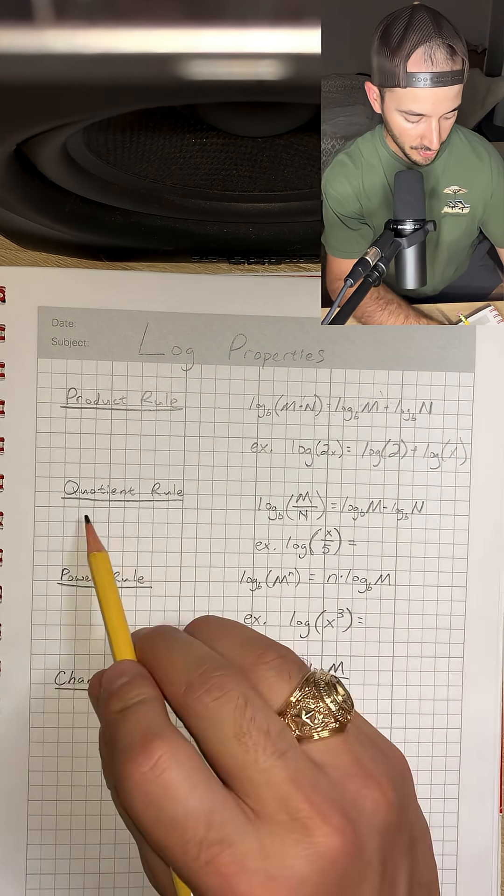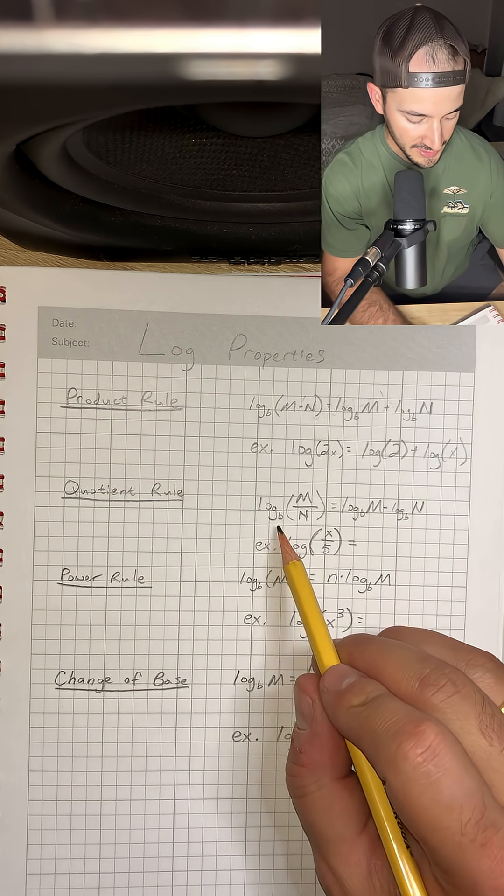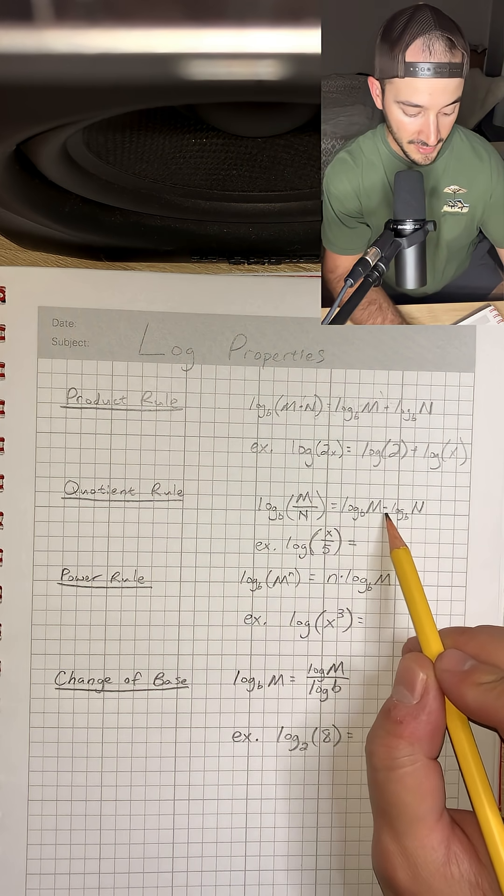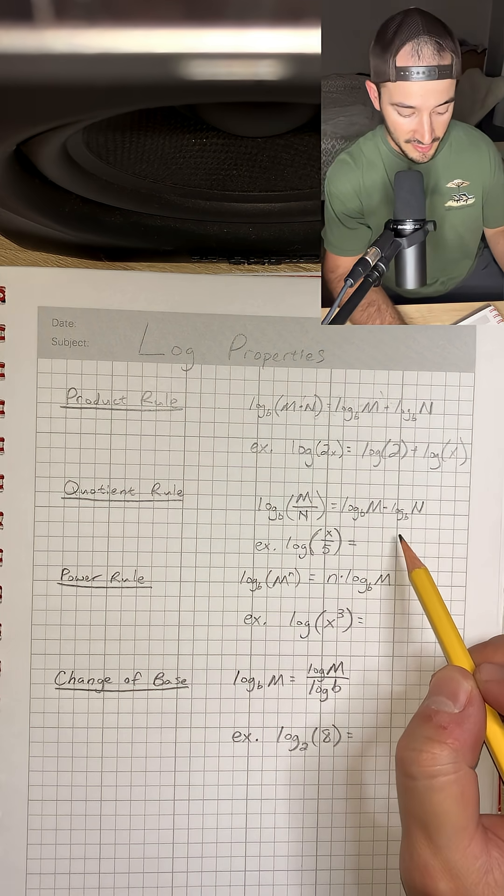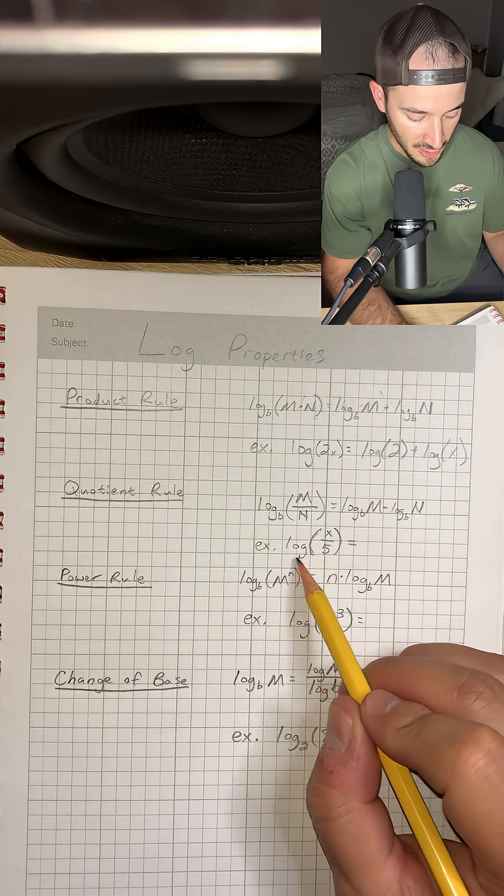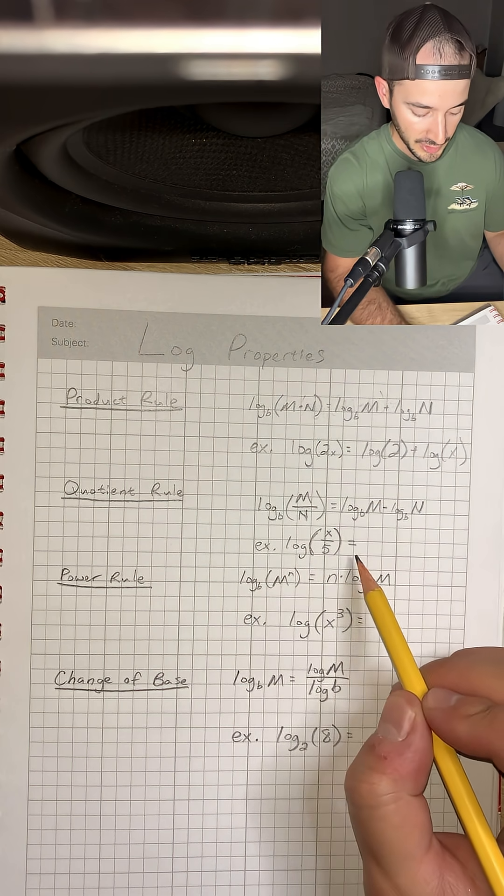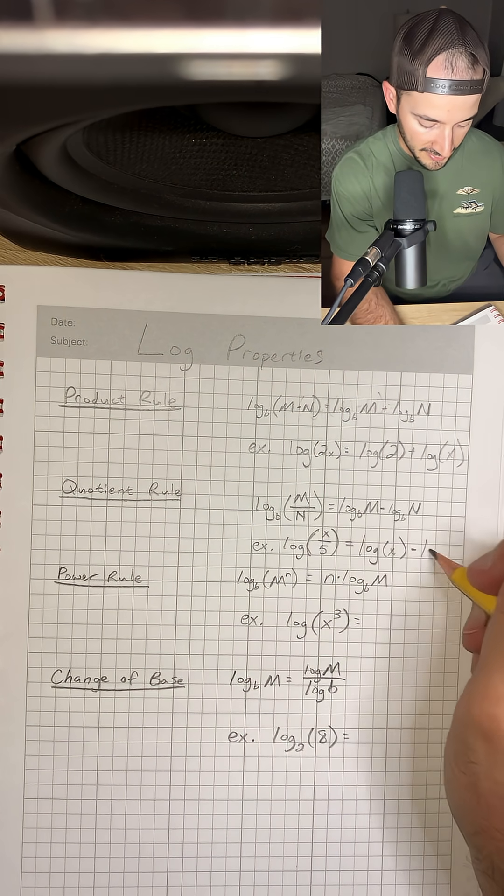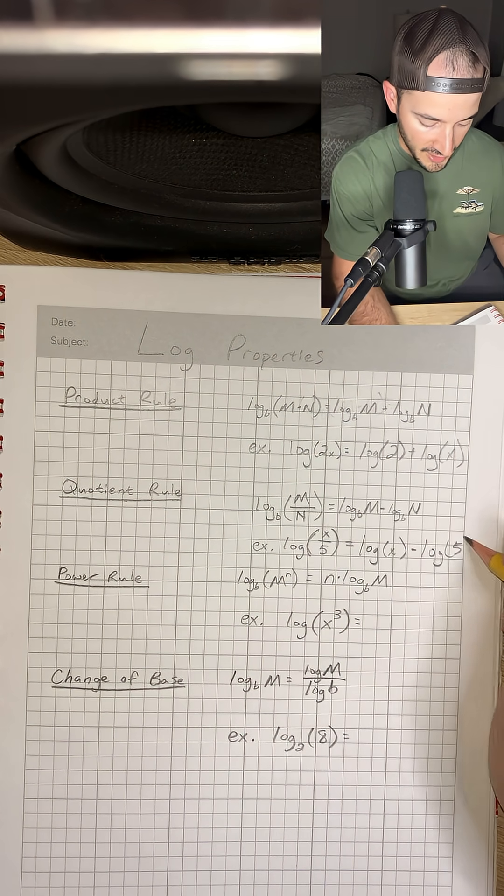Next we have the quotient rule, and that's log base b of m divided by n is equal to log base b of m minus log base b of n. Really similar to our last rule. For our example, we have log of x over 5, and we can rewrite that as log x minus log 5.